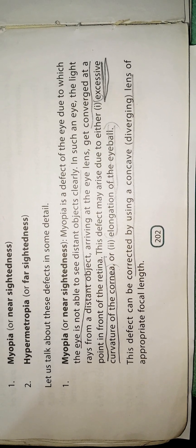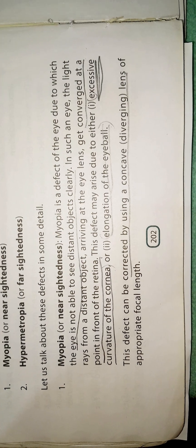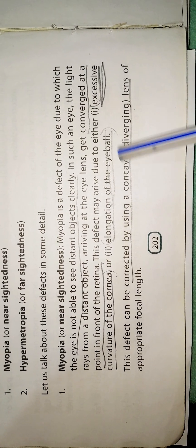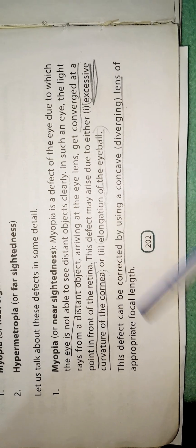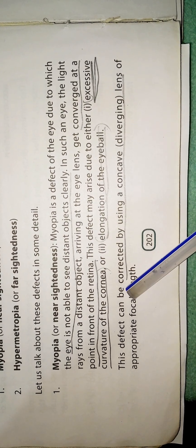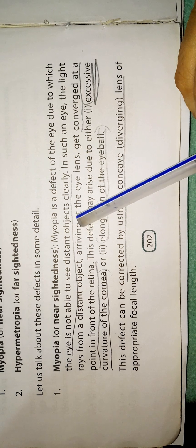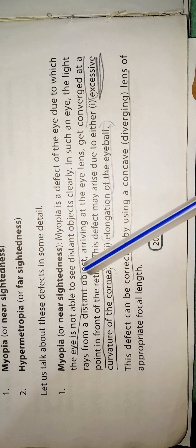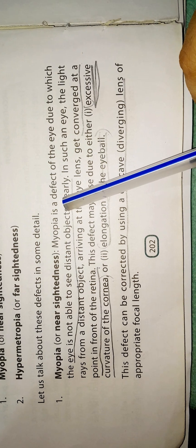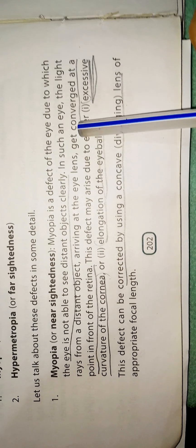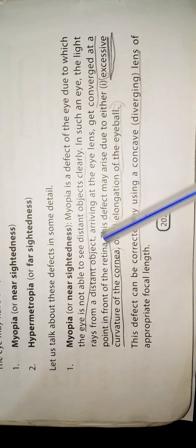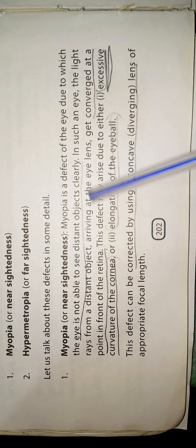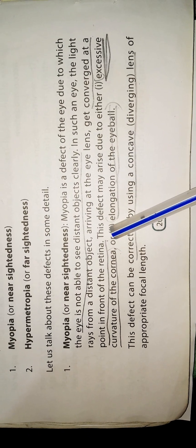First, I will discuss about what is myopia or nearsightedness. Myopia is a defect of the eye due to which the eye is not able to see distant objects clearly. In such an eye, the light rays from a distant object arrive at the eye lens and get converged at a point in front of the retina.